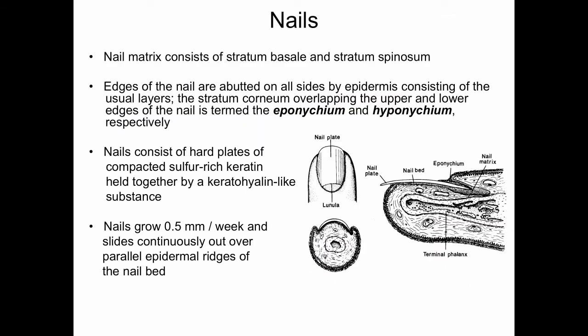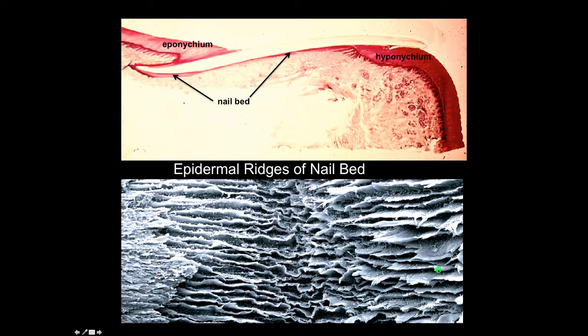The nail matrix consists of stratum basale and a stratum spinosum. The edges of the nail are abutted on all sides by epidermis consisting of the usual layers. The stratum corneum overlapping the upper and lower edges of the nail is termed the eponychium and hyponychium respectively. Nails consist of hard plates of keratin — very sulfur-rich and compacted, with layers held together by a keratohyalin substance. Nails grow relatively rapidly, about half a millimeter per week, sliding continuously out over the parallel epidermal ridges of the nail bed.